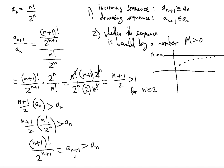This holds for values of n greater than or equal to 2. When n equals 1 the ratio equals 1, but that doesn't matter because we're interested in the behavior of the sequence as n grows, not for the first few terms. So we've shown that it is indeed an increasing sequence.